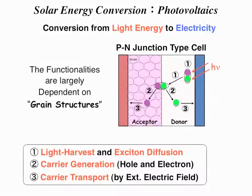First, I am going to talk about the mechanism of solar energy conversion. Here you can see the very standard PN junction type cells. In photovoltaic cells, there are three major processes.